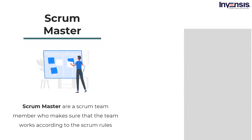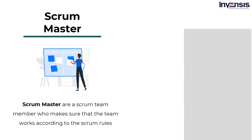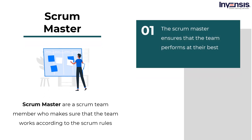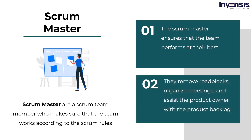The Scrum master is a Scrum team member who makes sure that the team works according to the Scrum rules. The Scrum master should ensure that the team performs at their best, which may include removing roadblocks, organizing meetings, and assisting the product owner with the product backlog. The Scrum master is a servant leader — a helpful leadership style. They decide what the team members' tasks are on a daily basis, assist the product owner by better understanding and communicating value, managing the backlog, planning work with the team, and breaking down tasks to give the most effective learning.